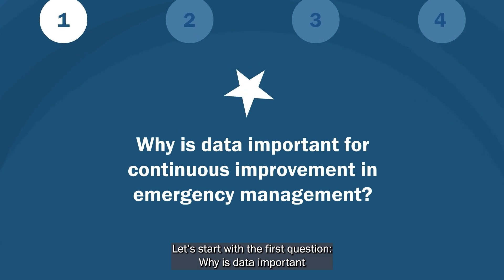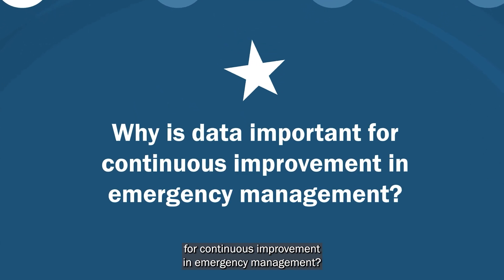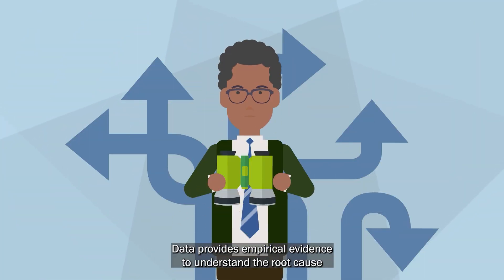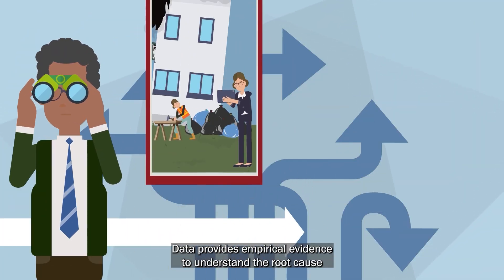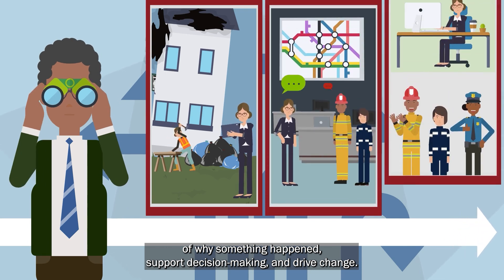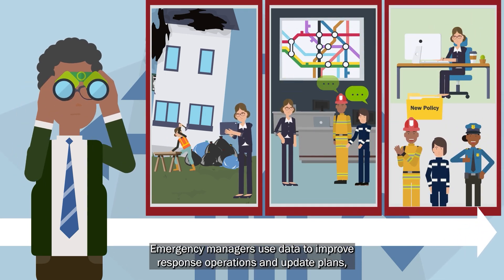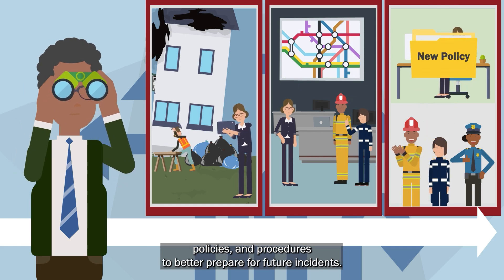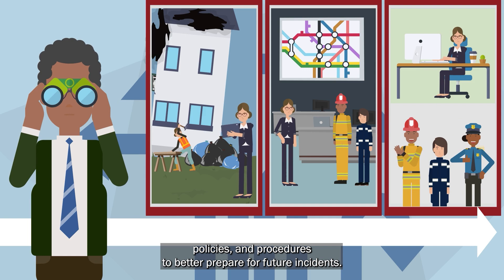Why is data important for continuous improvement in emergency management? Data provides empirical evidence to understand the root cause of why something happened, support decision-making, and drive change. Emergency managers use data to improve response operations and update plans, policies, and procedures to better prepare for future incidents.